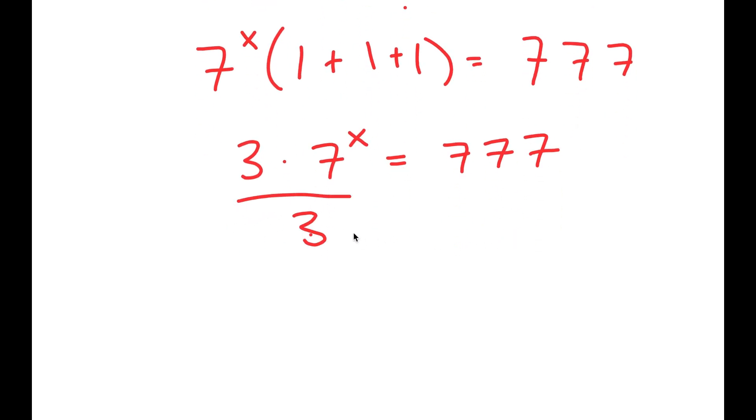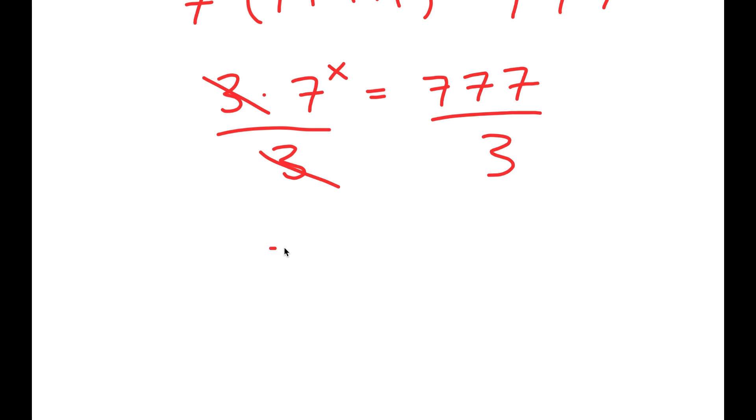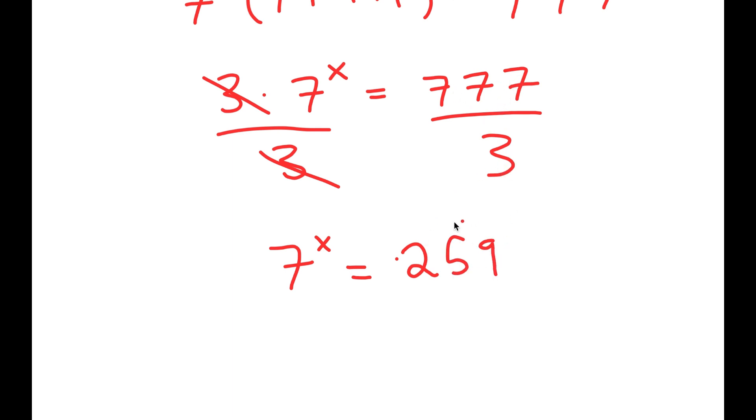Now, I'm going to divide both sides by 3, so these two cancel out, and I get 7 to the power of x is equal to 259 because 777 divided by 3 is 259.